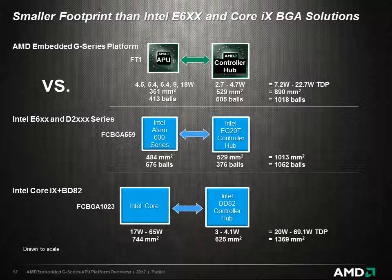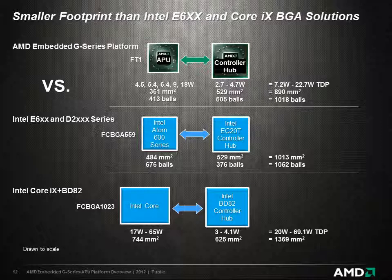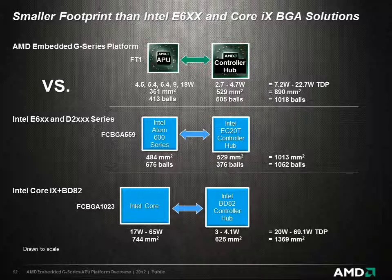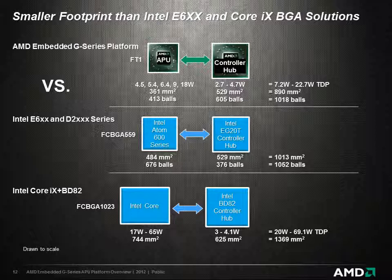Comparing the footprint of the AMD G-Series platform to the Intel Atom solutions, you can see that the G-Series has about a 12% smaller footprint, enabling it to fit into many small form-factor designs. And with a 45% smaller footprint than the Intel Core solutions, the AMD G-Series platform allows OEMs to offer high-performance graphics in form factors that are not possible with the Intel solutions, such as Pico-ITX and Q7.